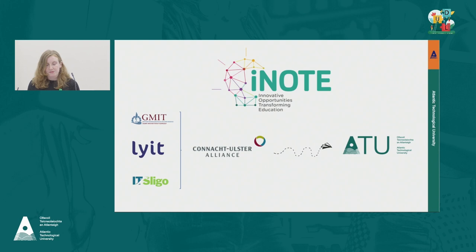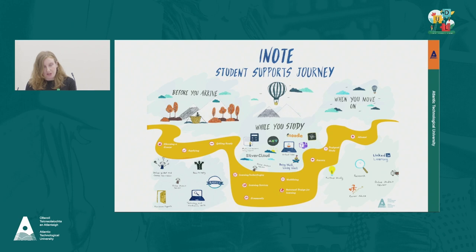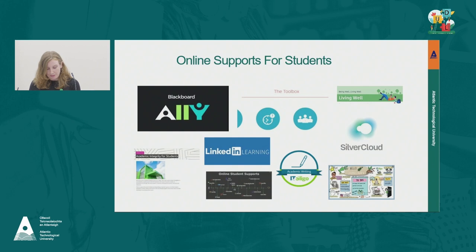A definitive structure was necessary to provide clear visibility of what was already available to students and highlight any significant gaps, overlaps, or potential areas for collaboration. This approach was particularly vital for a multi-campus project. While ATU does provide a range of supports for students already, as often happens in large organisations, some supports can be quite siloed and conveying the right information at the right time can be challenging.